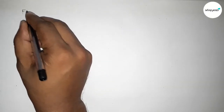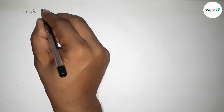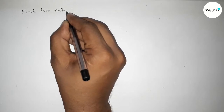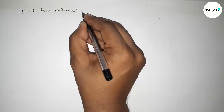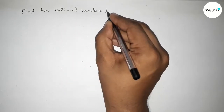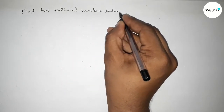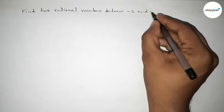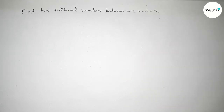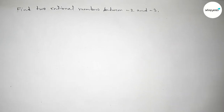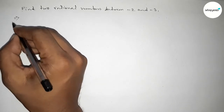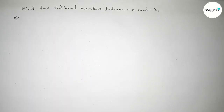Hi everyone, welcome to SISR Classes. Today in this video we have to find out two rational numbers between minus 2 and minus 3. So let's start the video. First of all, write down here the given two numbers: minus 2 and minus 3.